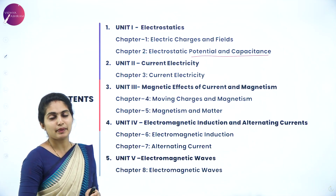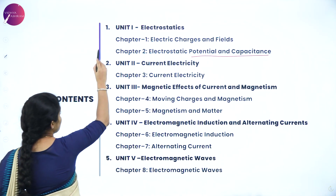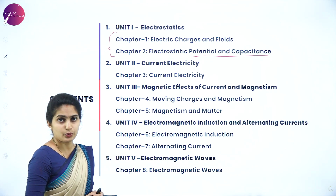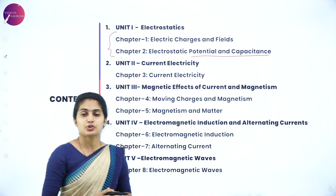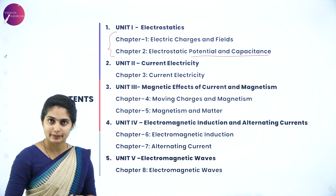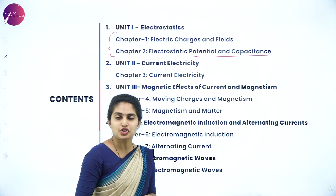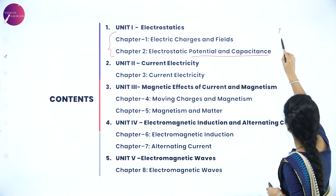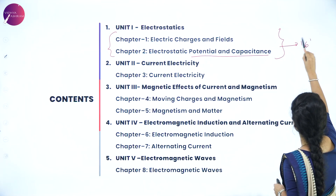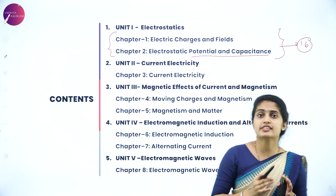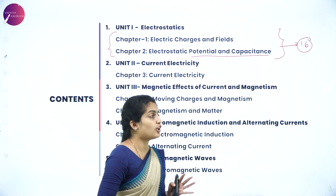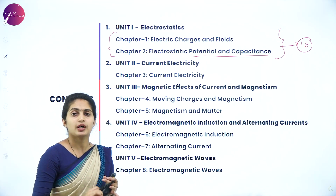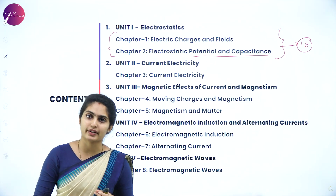These two are the basic chapters which you have to know very carefully, because they act as a base for the rest of the chapters studied with respect to current. This unit one — Chapter 1 and Chapter 2 — has a total marks allotment of 16 marks.